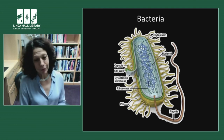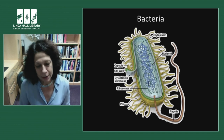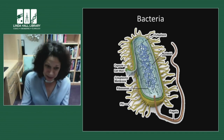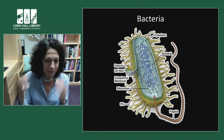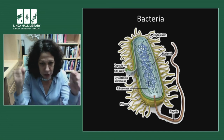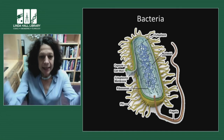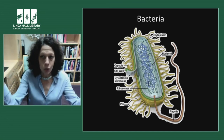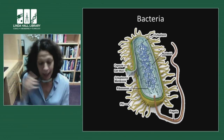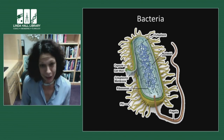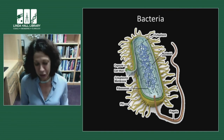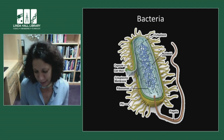We've known about bacteria for about 500 years, and for 480 of those years they've always been thought to be really simple and primitive — they eat and divide. When they divide, each sister cell has no knowledge of its sibling; they each just go out and live their own life with no interactions with their neighbors. I'm going to try to convince you that's not true — that in fact they have profound interactions and can actually communicate and carry out group behaviors.